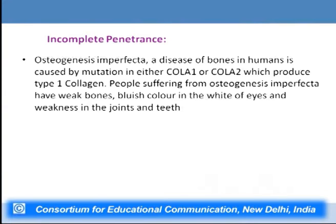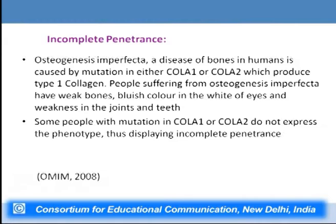Another example of incomplete penetrance is osteogenesis imperfecta, a disease of bones caused by mutation in either collagen A1 or collagen A2 genes, which produce type 1 collagen. People with this condition have weak bones, bluish coloring in the whites of the eyes, and weakness in joints and teeth. Some people with mutations in colA1 or colA2 do not express the phenotype, thus displaying incomplete penetrance.